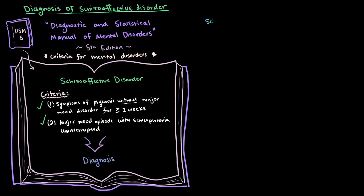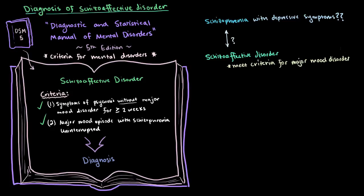But doesn't schizophrenia sometimes include depressive symptoms? What's the difference between schizophrenia with depressive symptoms and schizoaffective disorder? Well, in order to be diagnosed with schizoaffective disorder, you have to meet the criteria for major mood disorders as well. So if they were diagnosed with schizophrenia with depressive symptoms, the depressive symptoms must not be meeting the criteria to constitute a major mood disorder. Additionally, the patient has to be experiencing impairments in functioning due to both the schizophrenia and the major mood disorder.